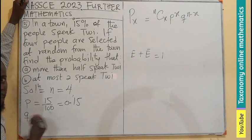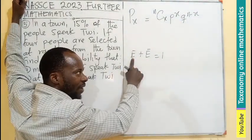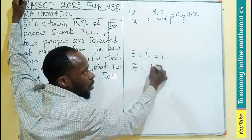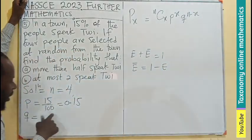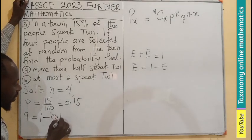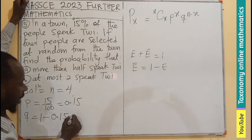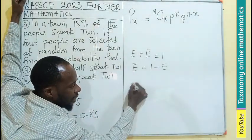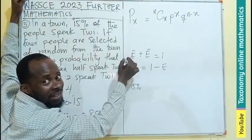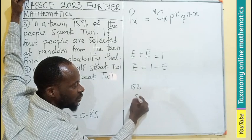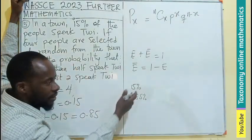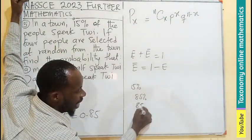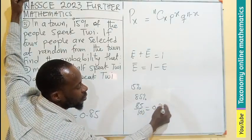Then the probability of failure: success plus failure equals 1, so failure equals 1 minus 0.15, which gives us 0.85. Alternatively, if 15% is success, then 85% is failure, and 85 over 100 equals 0.85.